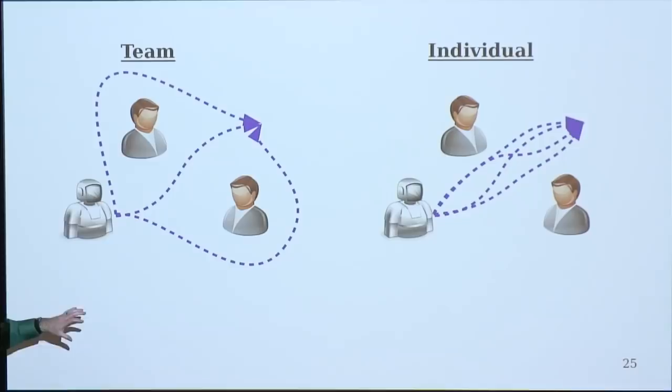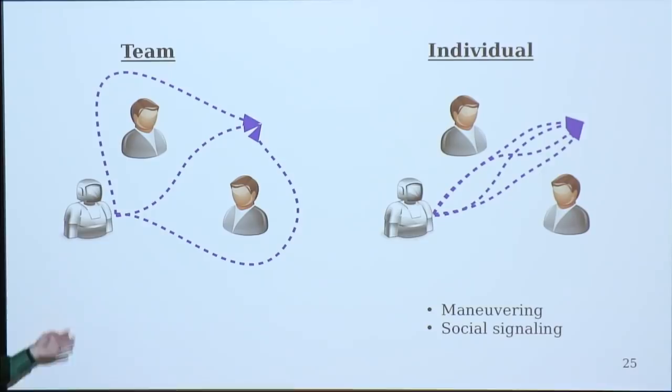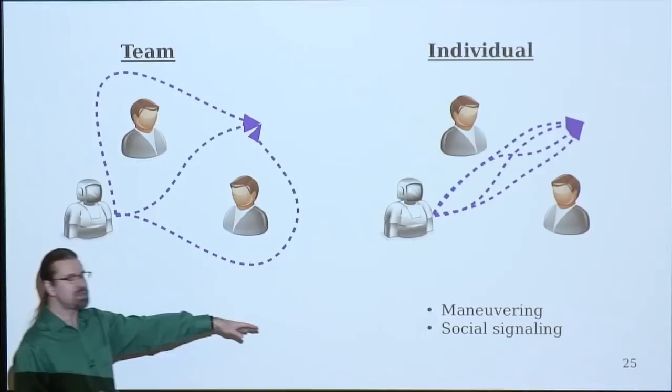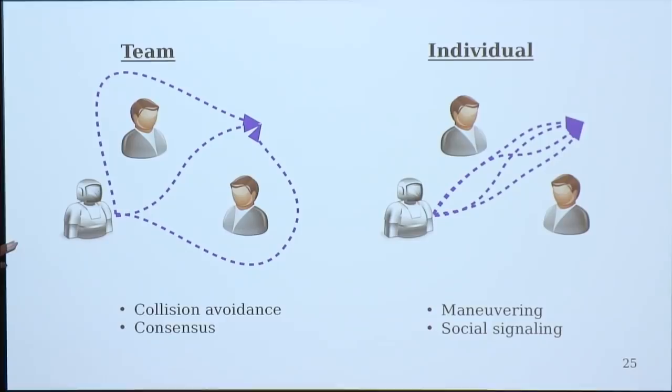So on the individual side, when you're choosing a path, you're looking at the shape of the path and you're maneuvering. You're signaling socially to the other agents. So these are fundamentally individual decisions that you don't need buy-in from the other agents to do these things. On the other side, we have the team. So when I'm choosing a topology of my path, I'm choosing do I go right or do I go left? I can't do that by myself. I need buy-in from the other members of the team to achieve consensus about how are we going to avoid collision and get by each other. So this fundamental structure you'll see actually pervades a lot of these tasks that we're looking at.